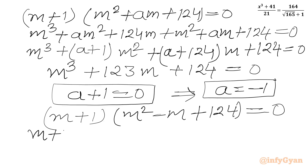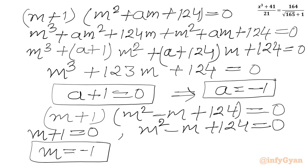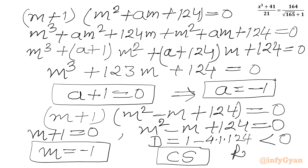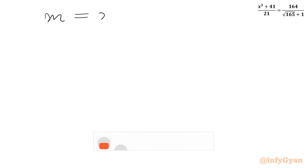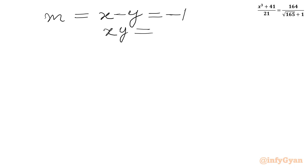From (m + 1) = 0 we get m = −1. For the quadratic m² − m + 124 = 0, the discriminant is 1 − 4 × 124 = 1 − 496, which is negative, so it gives complex solutions and we reject it. Therefore m = −1 is the accepted value, meaning x − y = −1, and our second equation is xy = 41.